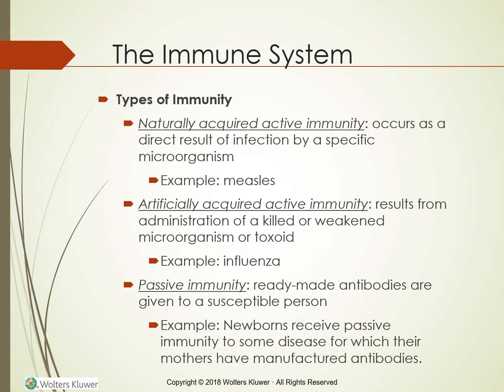Immunizations not administered or completed during childhood are recommended for adults. Some immunizations, such as those for tetanus, influenza, and pneumonia, require re-administration to maintain adequate immunity. Gerontologic consideration: the amount of antibody produced in response to most foreign antigens decreases with age. Although vaccination against viral disorders is recommended, vaccines are less effective in older adults, probably because of the decreased immune response that occurs with aging. The CDC recommends annual seasonal influenza vaccine, pneumococcal polysaccharide vaccine (PPSV23/Pneumovax) for all adults 65 years or older or those who are high risk, and shingles vaccine (Zostavax) for all over the age of 60.